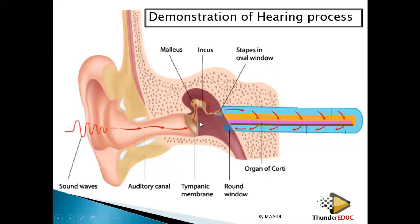Then the tympanic membrane causes the three bones — the ossicles: the malleus, incus, and stapes — to vibrate. The vibration is being amplified, and the last bone, which is the stapes, causes the oval window to vibrate.